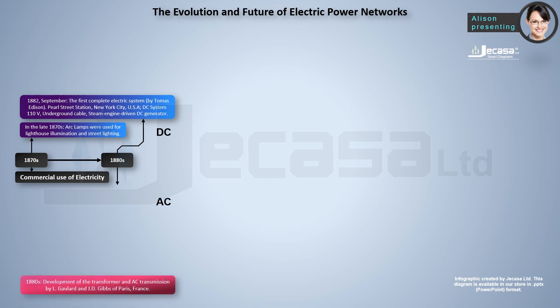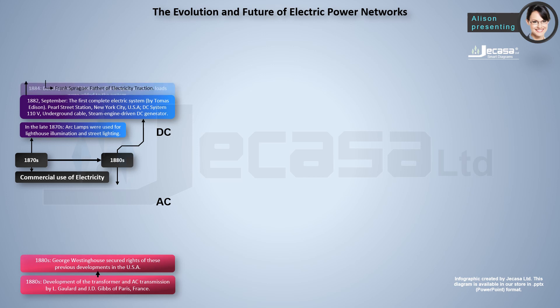In the 1880s, the development of the transformer and AC transmission was pioneered by L. Gaulard and J.D. Gibbs of Paris, France. George Westinghouse secured rights to these developments in the USA. In 1884, Frank Sprague developed motors, adding motor loads to the system. Frank Sprague is considered the father of electric traction.